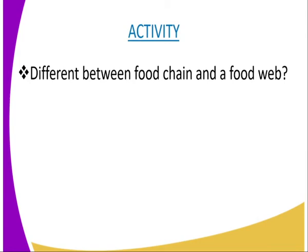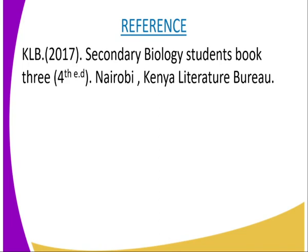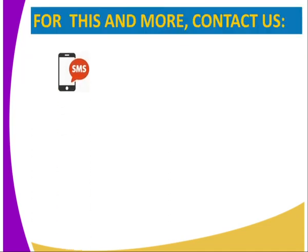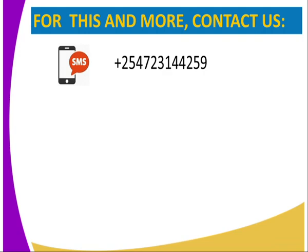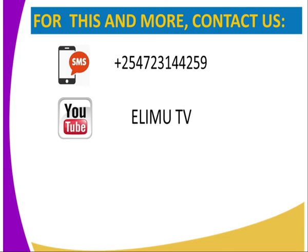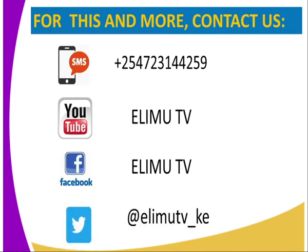Having done that, we can have the following activity whereby you will be required to differentiate between the food chain and the food web. For this lesson, you can refer from KLB secondary biology students book 3, fourth edition Nairobi, certified by the Kenya Literature Bureau. To get this and many more, you can contact us by sending us an SMS on the number appearing on our screen, or subscribe to our YouTube channel, which is Elimutv, or our Facebook page, which is also Elimutv, or tweet us at Elimutv underscore Kenya. Thank you.